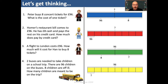Let's match these up correctly. Let's have a look at the first one. Peter buys eight concert tickets for £96. What is the cost of one ticket? Well in this problem, the whole amount is £96 and we're looking to buy eight tickets. So we're looking for the bar that has a whole amount of £96 and is split into eight parts. So you can see that's the yellow bar down the bottom.